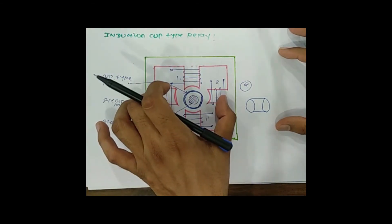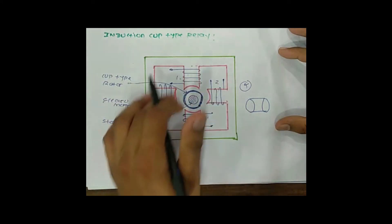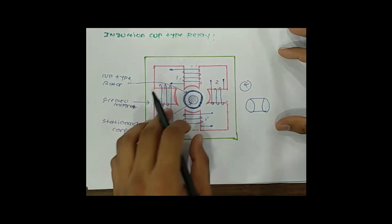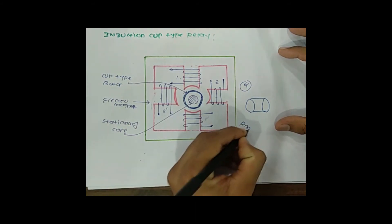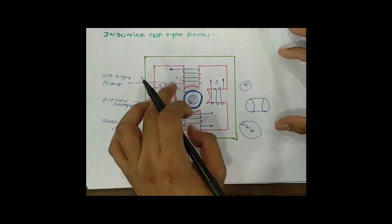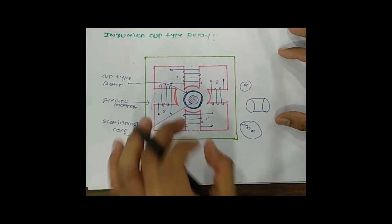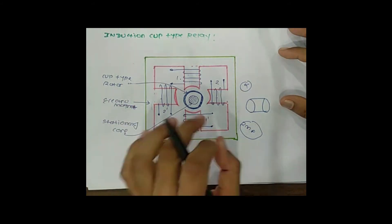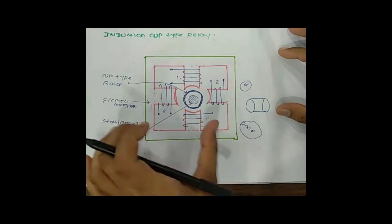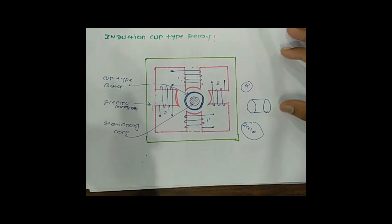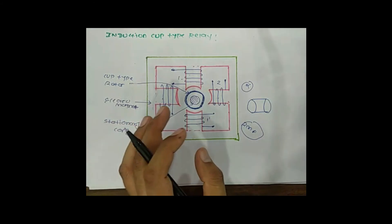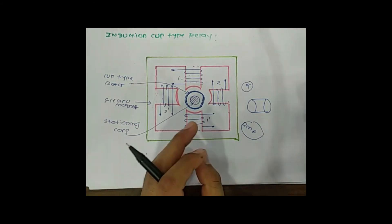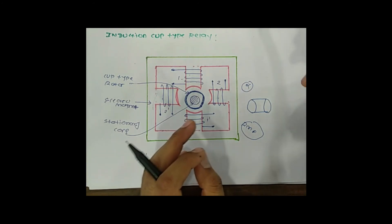The resultant flux in the air gap is rotating. Because of the two pairs of coils, one flux is produced by each pair, and these two fluxes are displaced from each other. The resultant rotating magnetic field (RMF) in the air gap is produced by these two pairs of coils. Due to this, eddy currents are induced in the cup type rotor, and because of these eddy currents, flux is produced. The interaction of these two fluxes produces torque, and the rotor rotates in the same direction as the rotating magnetic field.